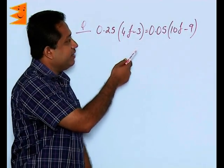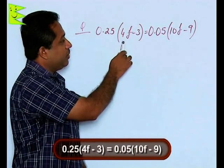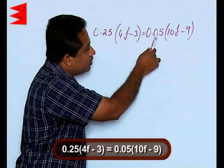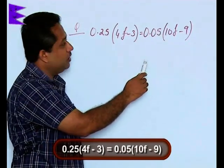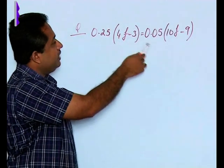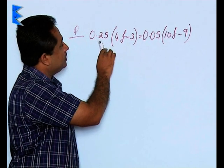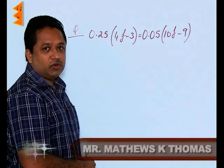This is a question involving decimals: 0.25 multiplied by 4F minus 3 equals 0.05 multiplied by 10F minus 9. On the LHS and RHS, there is a decimal on each side. What will be the procedure for solving this?